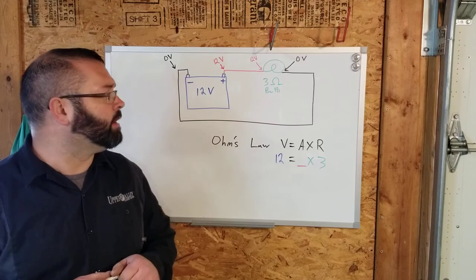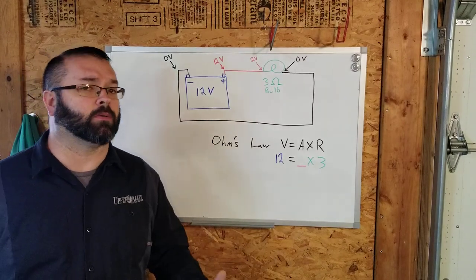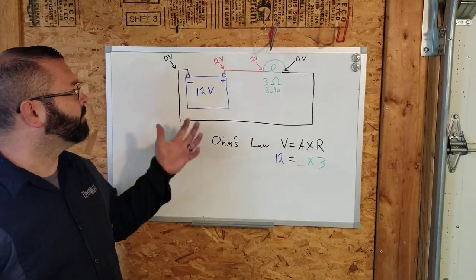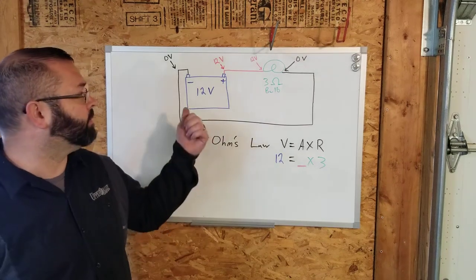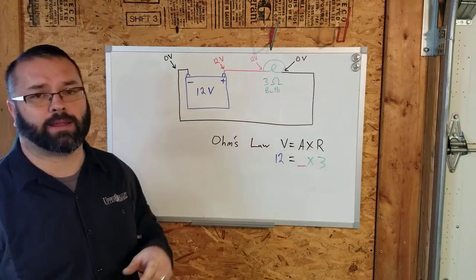Hey guys, Mr. Beeler again. We're going to get into a basic electrical diagram. Our setup here is a battery, our conductors, our wires, and a light bulb.